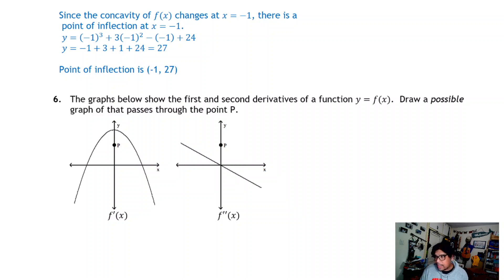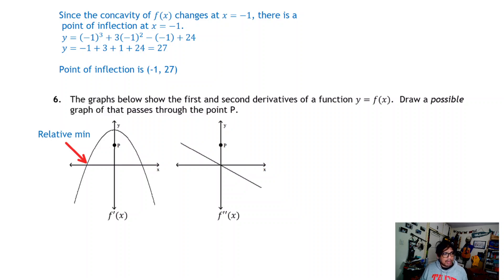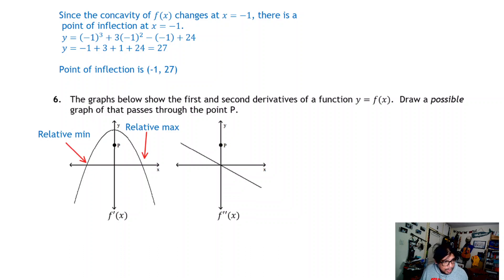Let's start by analyzing that first derivative. You can see at the left side of the y-axis, we've got a relative minimum here at this x-coordinate, and that's because the first derivative is going to change from negative to positive. Assuming that the function is continuous, that's going to signal us that we have a relative minimum here. Likewise, we have a relative maximum over at this x-coordinate, since the first derivative changes from positive to negative.